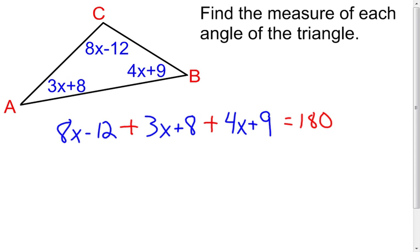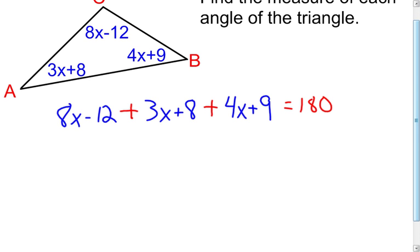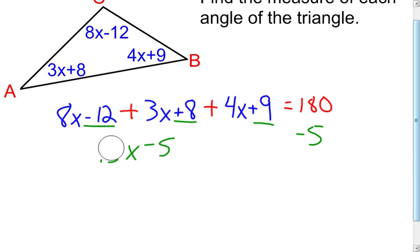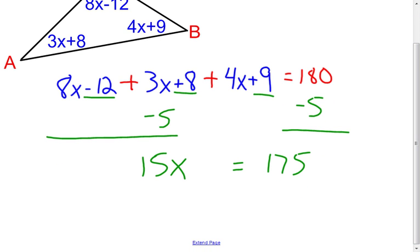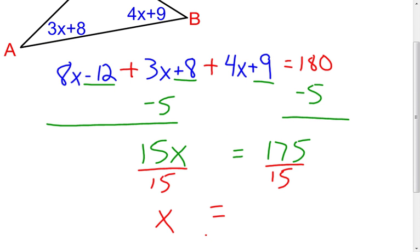Now I have an equation I can solve to figure out what x is, and then plug it back in. Combining the constants: negative 12 plus 8 plus 9 equals positive 5, so I subtract 5 from both sides. For the x terms: 8x plus 3x is 11x, plus 4x is 15x. So 15x equals 175. Dividing both sides by 15, x comes out to be 35 thirds — both 175 and 15 are divisible by 5.